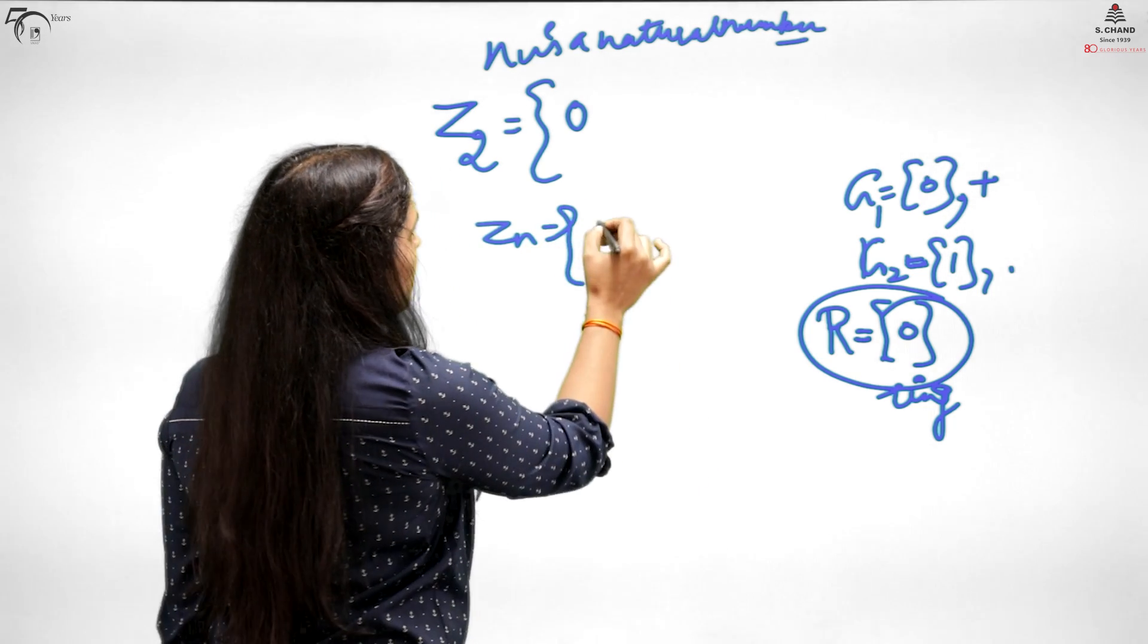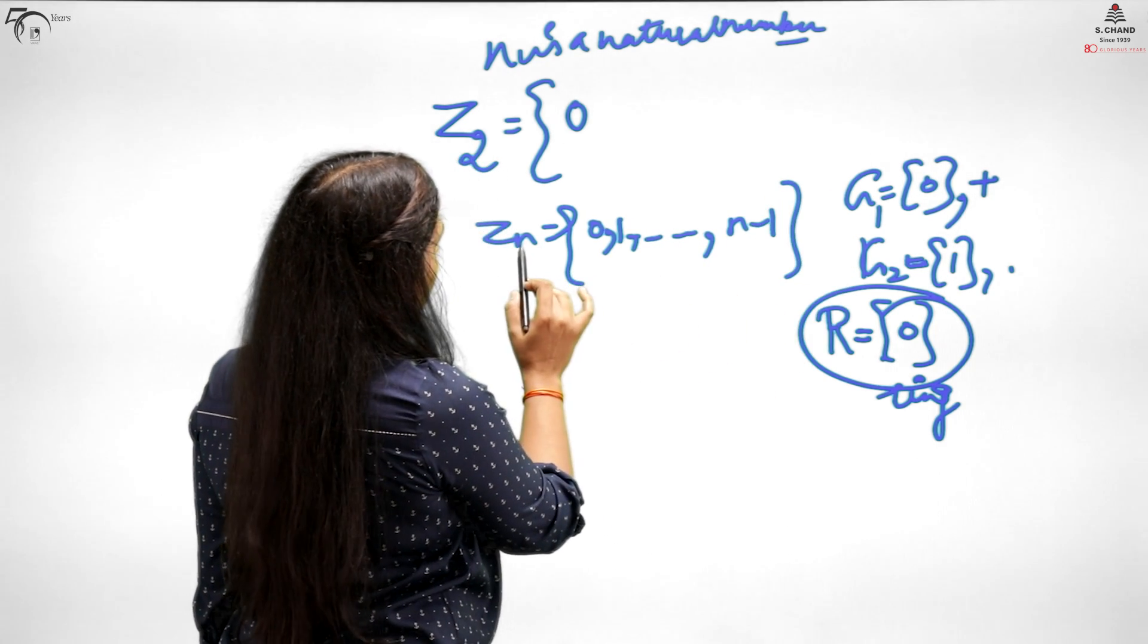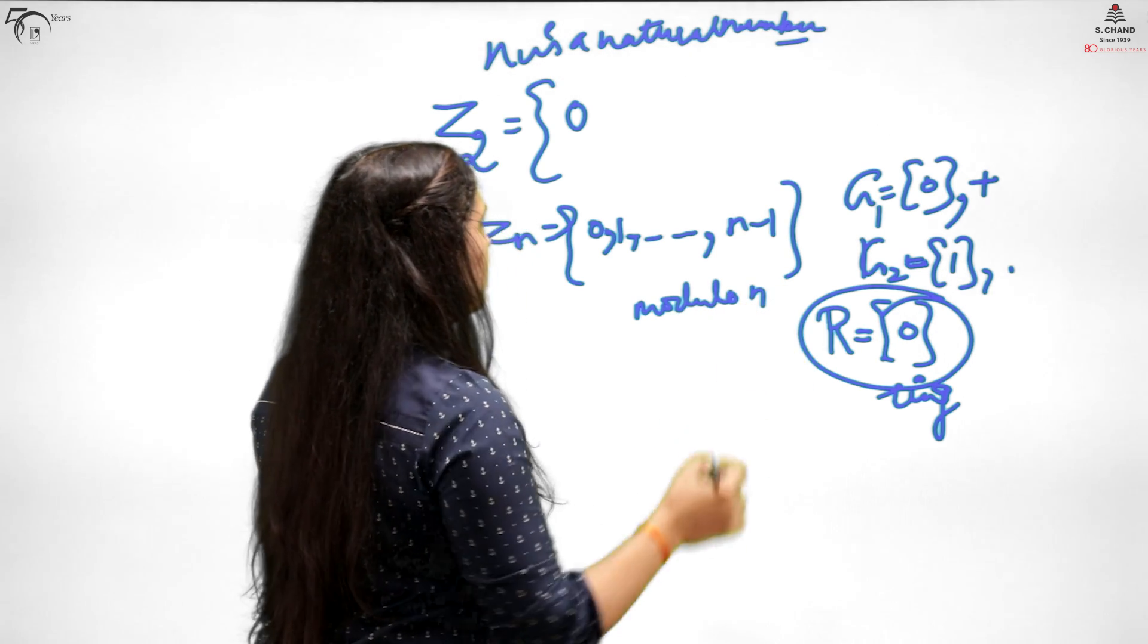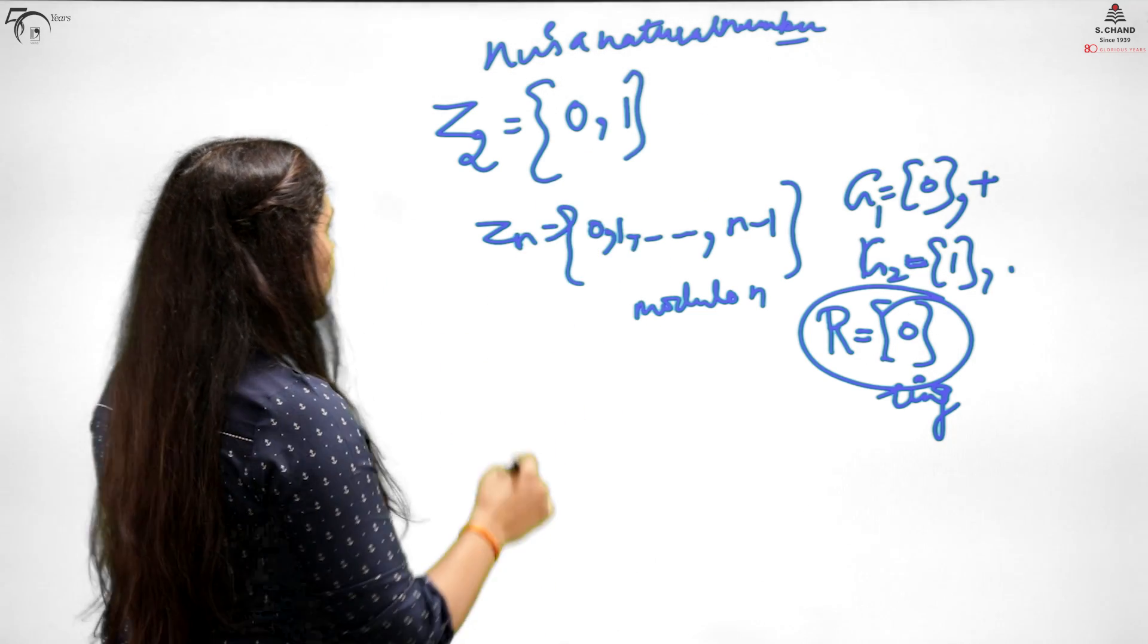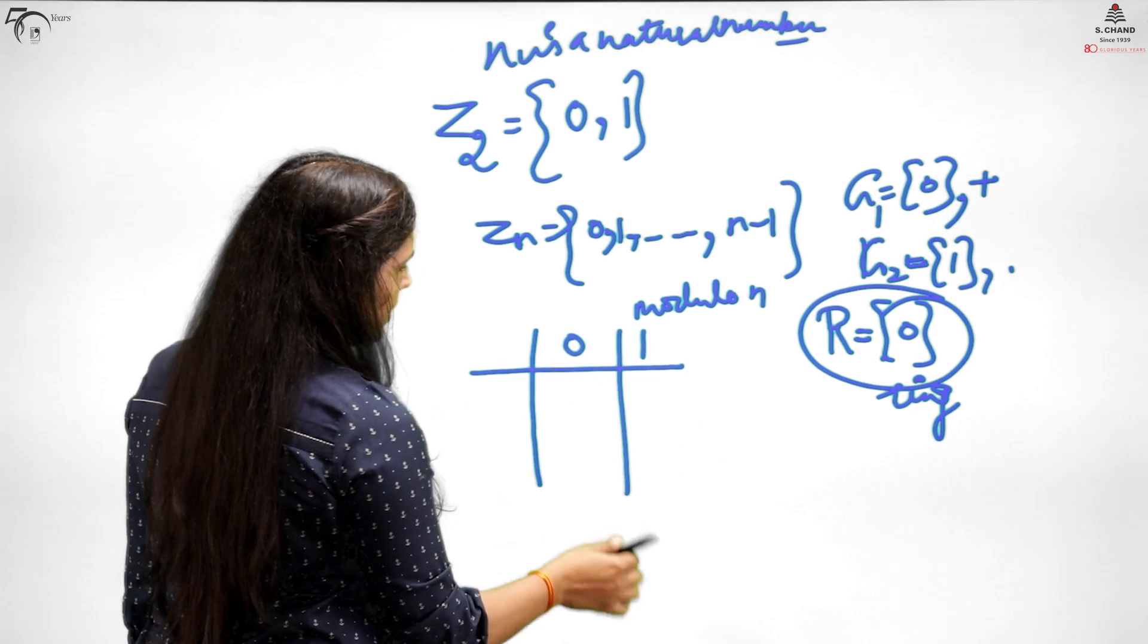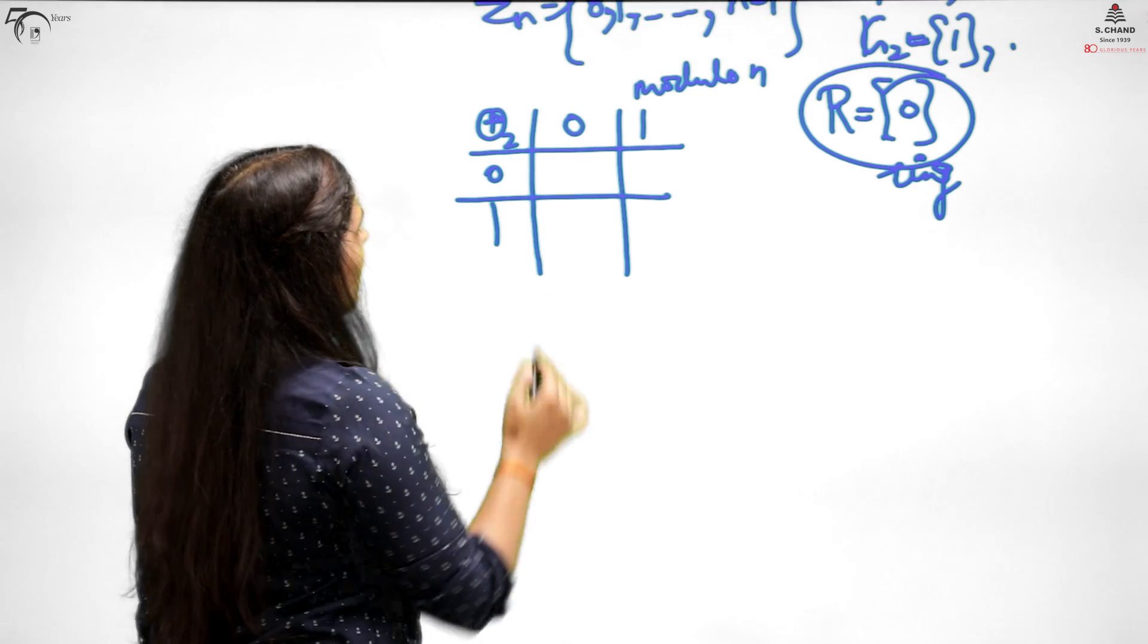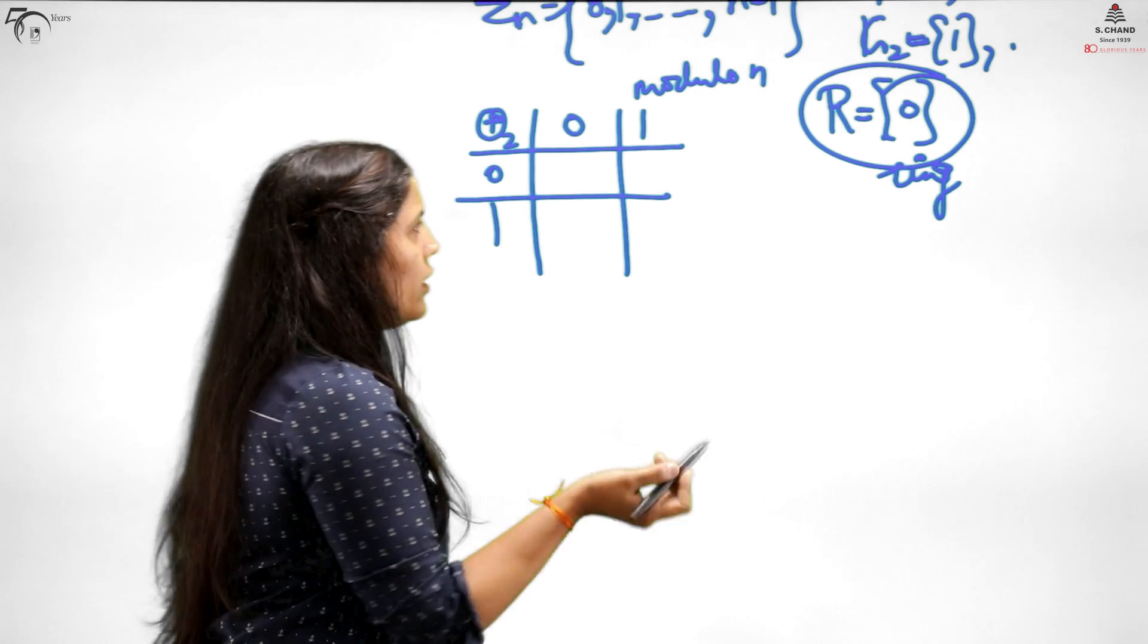As I did in group theory, I'll make a table. Tables make it very easy to understand. With respect to plus, you have to add these two elements. Add them, and if the sum is 2 or above, consider the remainder. So 0 plus 0 is 0, 1 plus 0 is 1, 1 plus 0 is 1, 1 plus 1 is 2, which means you divide and consider the remainder, which is 0.